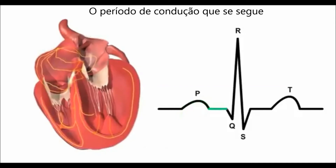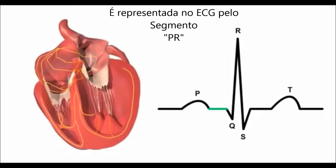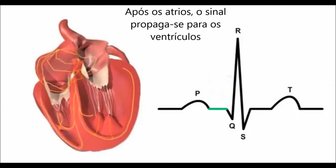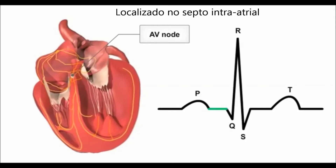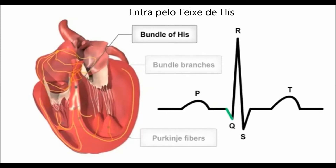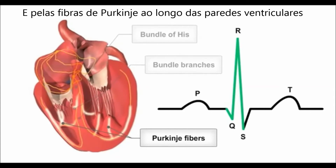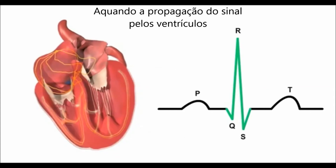The period of conduction that follows atrial systole and precedes the contraction of the ventricles is depicted on the ECG by the PR segment, a flat line following the P wave. When the signal leaves the atria, it enters the ventricles via the atrioventricular, or AV, node, located in the interatrial septum. It enters the bundle of His and spreads through the bundle branches and the large diameter Purkinje fibers along the ventricle walls.